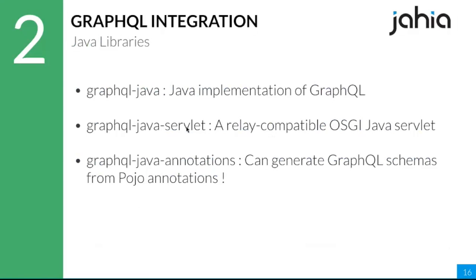Switching to the server side — there are a ton of libraries around GraphQL, which is amazing given how young it is. In Java, the main implementation is the graphql-java project, which contains all the query parsers and schema-building tools. Then there's graphql-java-servlet, which was a nice surprise because it's an OSGi service — already an OSGi project. And there's graphql-java-annotations, which lets you use Java annotations to build the schema, saving a lot of time.